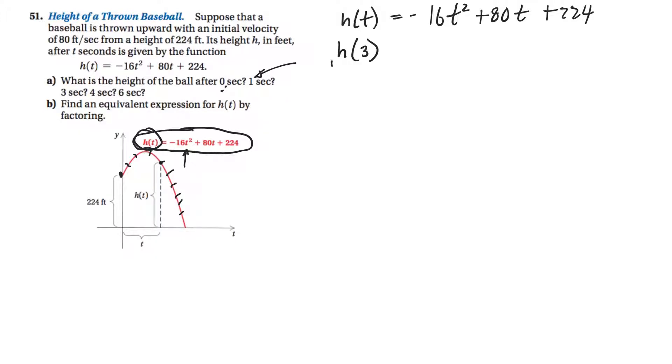Now, notice that this thing there, it's functional notation. So that means I have a function that's known as h, and I'm plugging in a three everywhere I see a t. Okay. So negative 16 times three squared plus 80 times three plus 224. Okay, figuring out what that is.